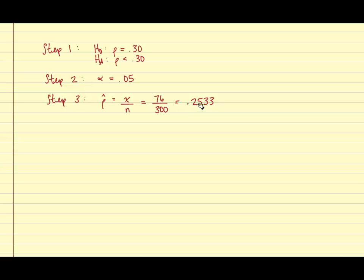Now we can enter this information into the formula. And so we have Z is equal to P hat minus P over the square root of P times Q over n. So P hat is 0.2533. P, which comes from our null hypothesis, is 0.30.